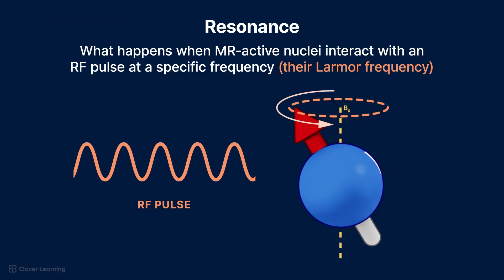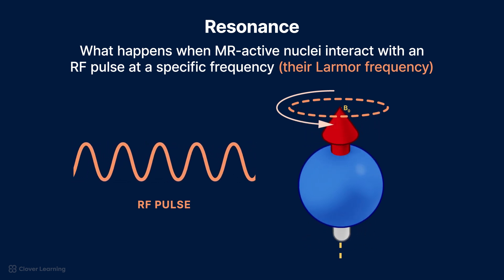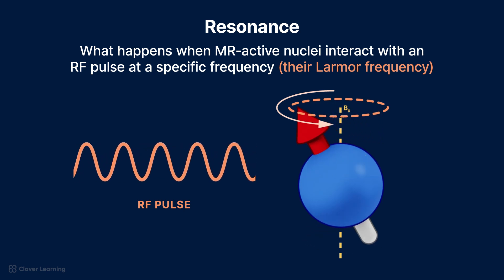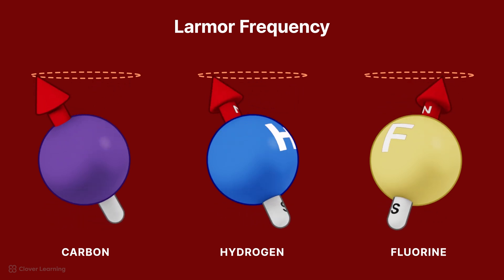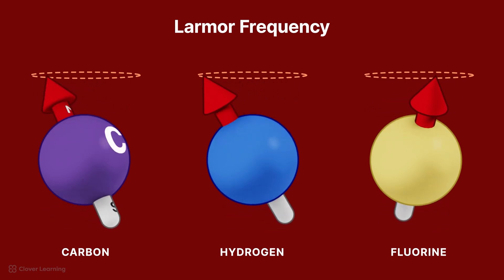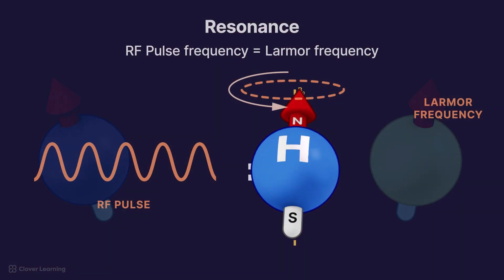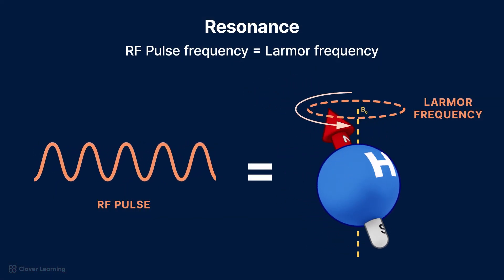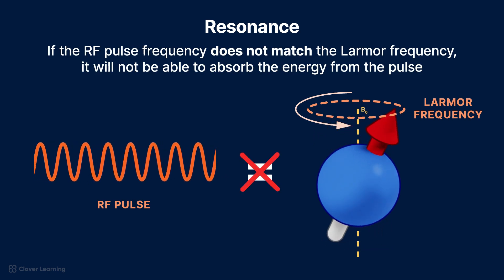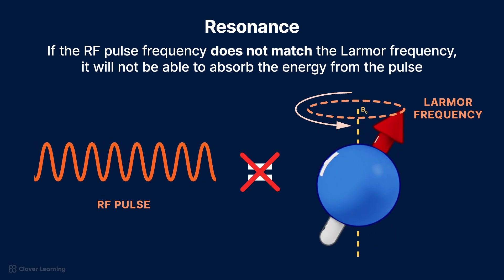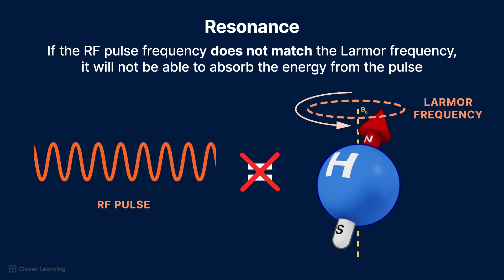First, let's define resonance. In MRI, resonance is what happens when MR-active nuclei interact with an RF pulse at a specific frequency — namely, their Larmor frequency. Remember that each MR-active nucleus has its own unique Larmor frequency, and in MRI we primarily focus on hydrogen nuclei. Hydrogen nuclei will only experience resonance if the RF pulse has a frequency equal to the Larmor frequency of hydrogen. If the RF pulse frequency does not match the hydrogen nuclei's Larmor frequency, it will not be able to absorb the energy from the pulse.